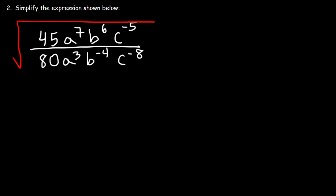Number 2. Simplify the expression shown below. The index number is 2. 45 is basically 9 times 5. 80 is 16 times 5. Now let's divide.